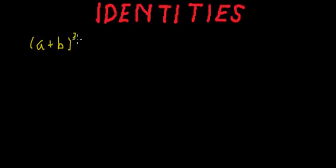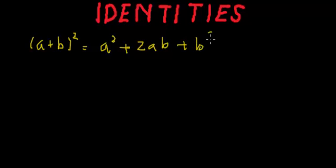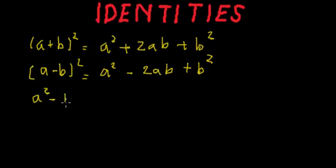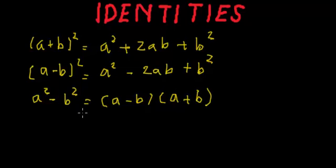Now we'll learn how identities like (a+b)² = a² + 2ab + b², (a-b)² = a² - 2ab + b², and a² - b² = (a-b)(a+b) can be derived.